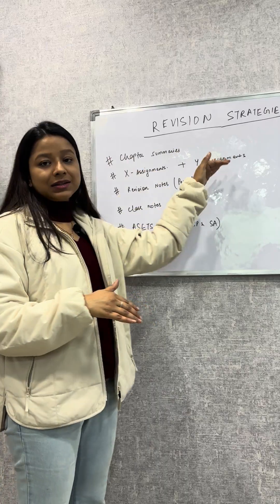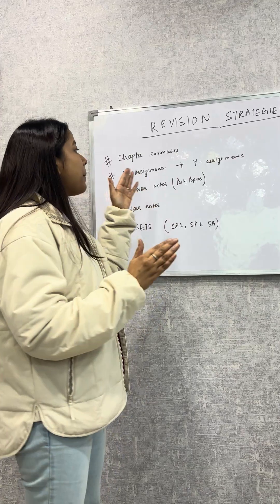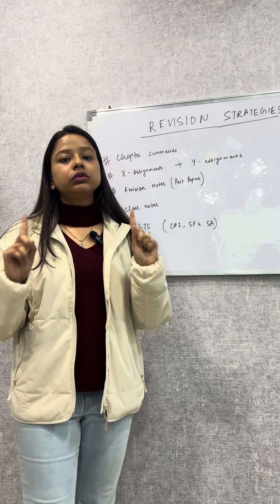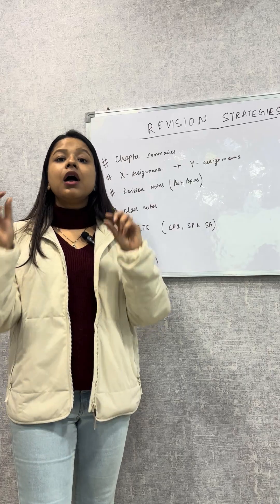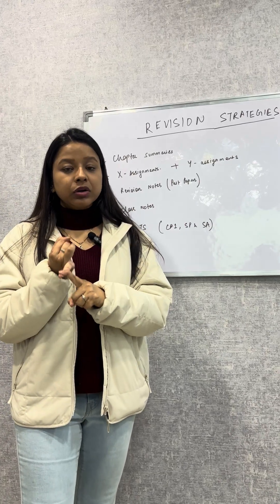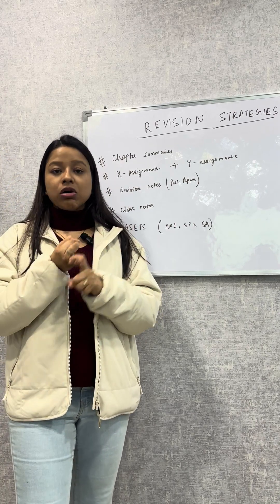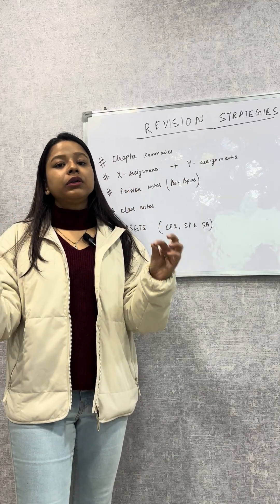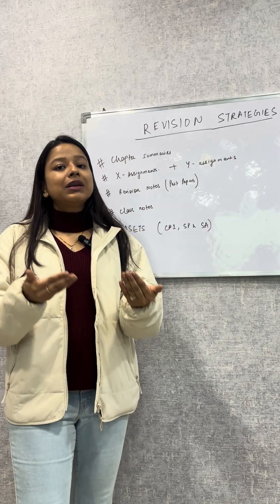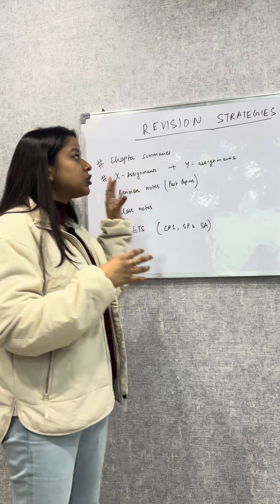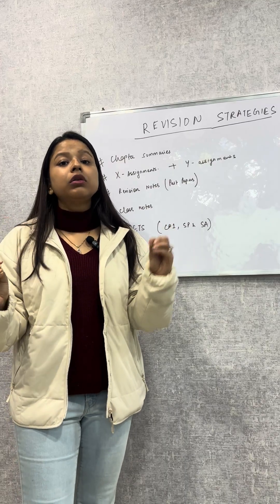Next are X assignments and Y assignments. Y assignments are only for Paper B, which is in CM and CS papers. X assignments are there in all actuarial examinations — there are either 4, 5, or 6 of them. They are extremely important for concept clearance and quick revision. Each X assignment is a proper 100-mark paper, so practice them as mock exams. I suggest solving all X assignments at least two times — you get a lot of similar questions.